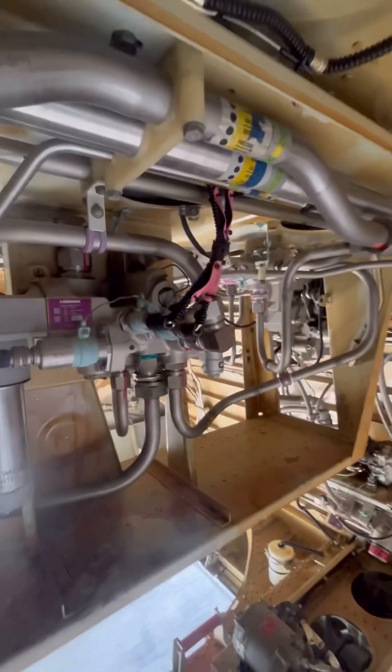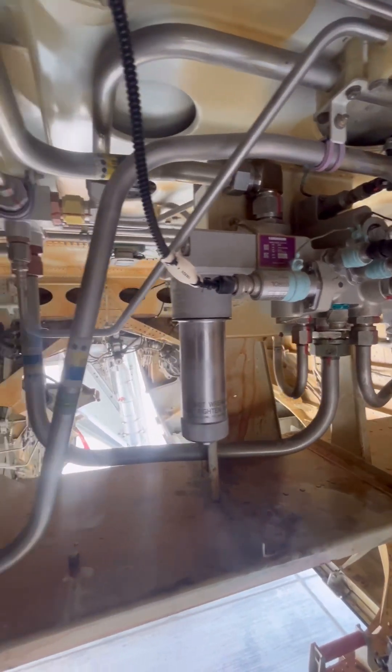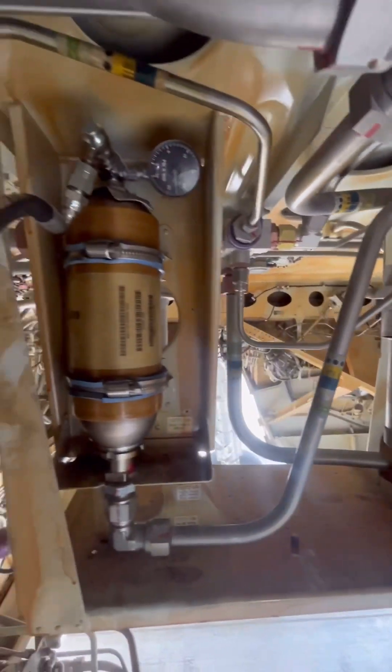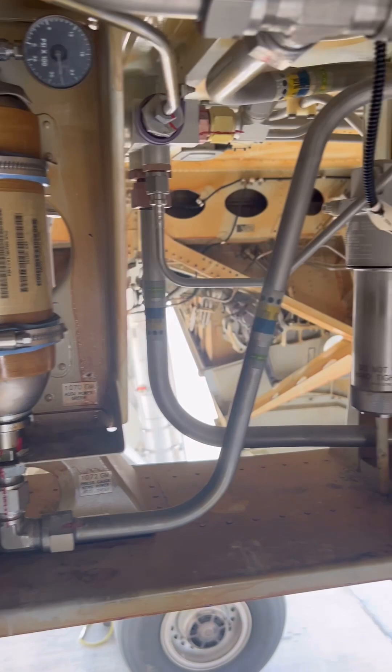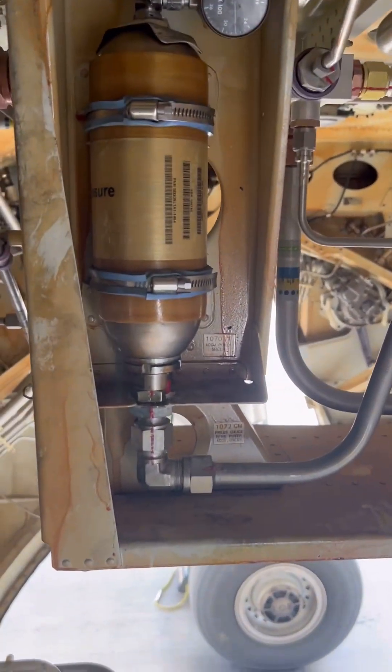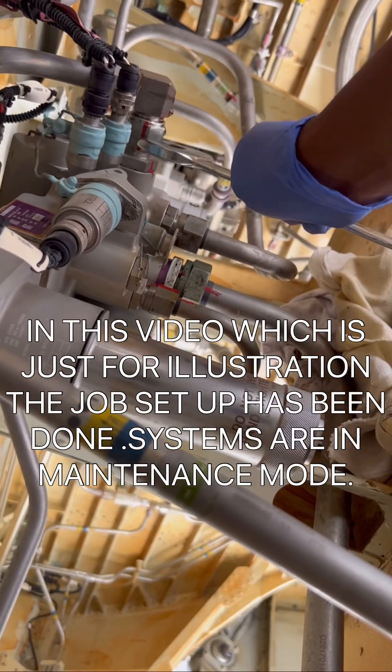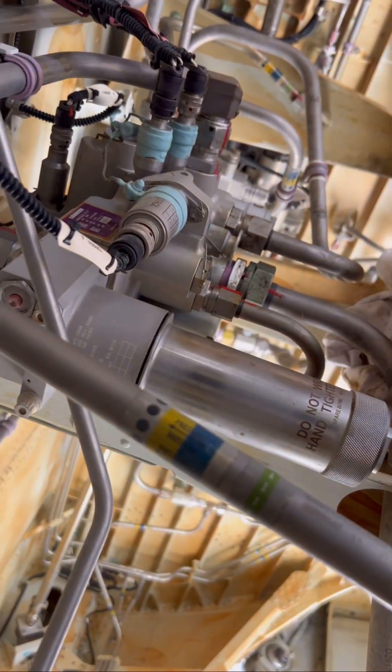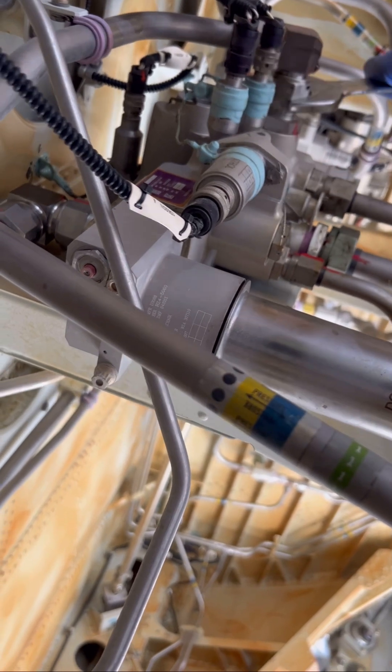Once all precautions are followed, system depressurized, and circuit breakers pulled as per AMM, we go for the deactivation. Right now we're removing pressure from the accumulator. Once fully depressurized, we remove the line that connects the accumulator to the hydraulic manifold. After that line is removed, blanking plugs have to be installed on both the accumulator and the manifold.